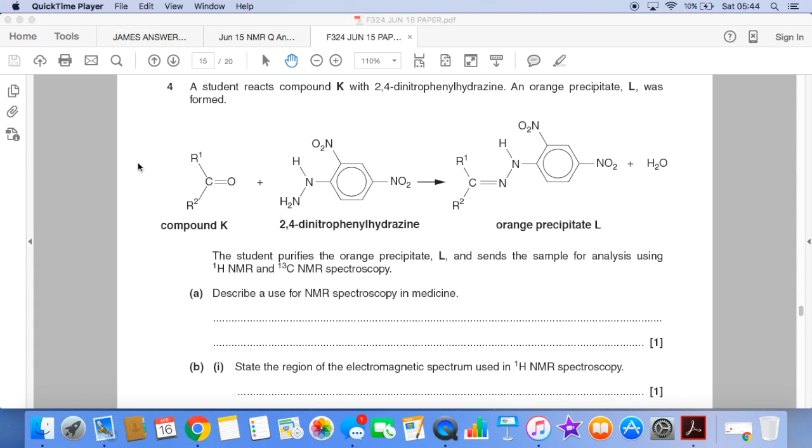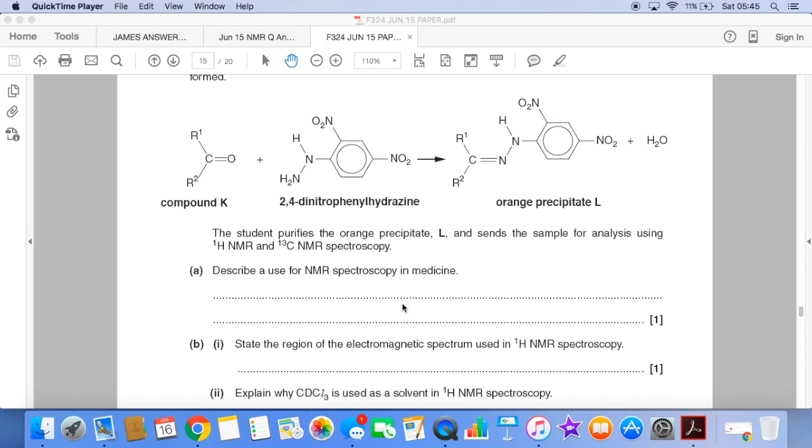I've got the NMR question here from the F324 June 15 paper. This one caused quite a stir. So I'll go through the question, then you have a go at answering it, and then I'll go through the answers. We're told a student reacts compound K with 2,4-DNP and it makes the orange precipitate as we're told in our lessons. We've got to describe a use for NMR in medicine and state the region of the electromagnetic spectrum used in proton NMR spectroscopy.